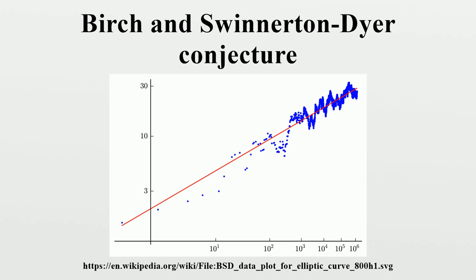It is named after mathematicians Brian Birch and Peter Swinnerton-Dyer, who developed the conjecture during the first half of the 1960s with the help of machine computation. As of 2014, only special cases of the conjecture have been proven correct.